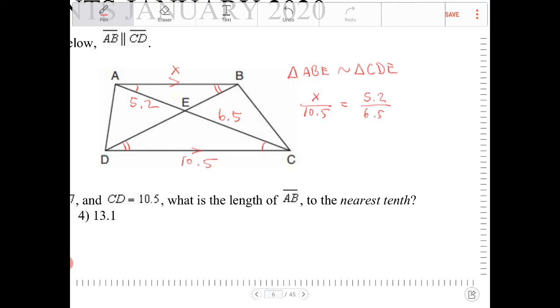Is this the only way that we can set this up? Of course not. You can do X over 5.2 is to 10.5 over 6.5, but in the end, you're going to end up with a similar setup.